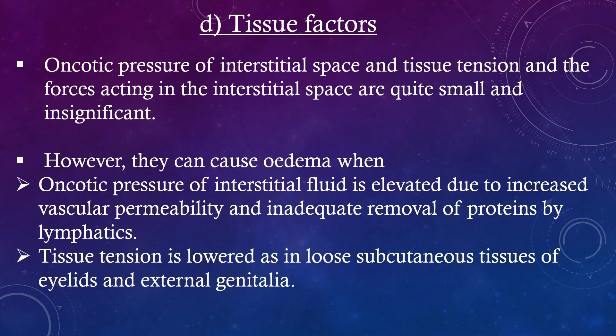Tissue factors. The oncotic pressure of the interstitial space and tissue tension — the forces acting in the interstitial space — are quite small and insignificant. However, they can cause edema when oncotic pressure of the interstitial fluid is elevated due to increased vascular permeability and inadequate removal of proteins by lymphatics. Tissue tension is lowered in loose subcutaneous tissues such as those of the eyelids and external genitalia.